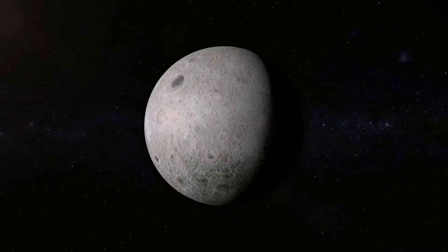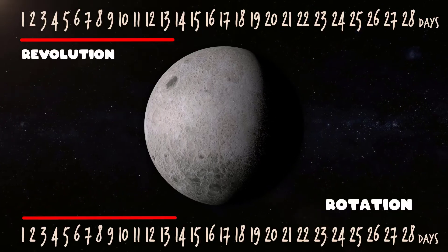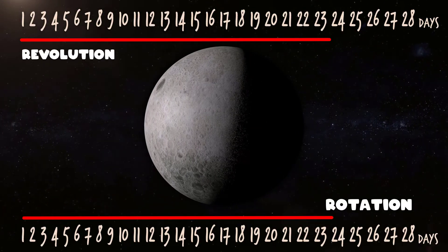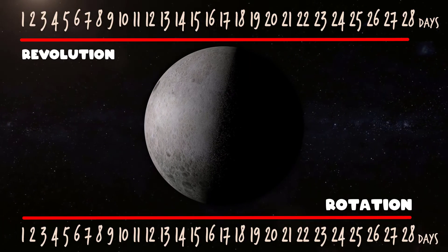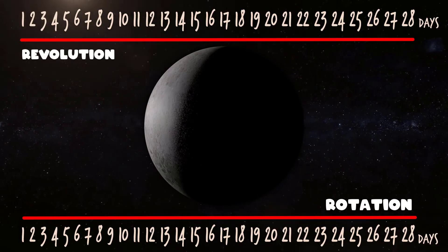Both movements — revolution and rotation — take 28 days. And since both movements have the same duration, we can only see one side of the moon at all times. Interesting, right?